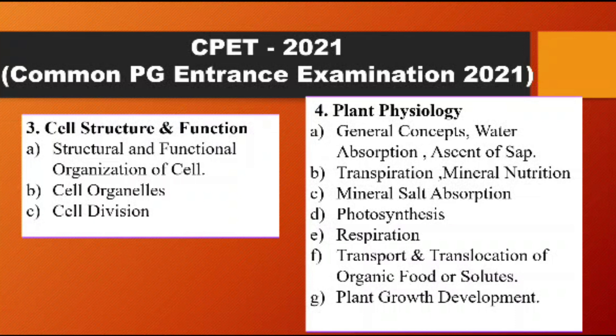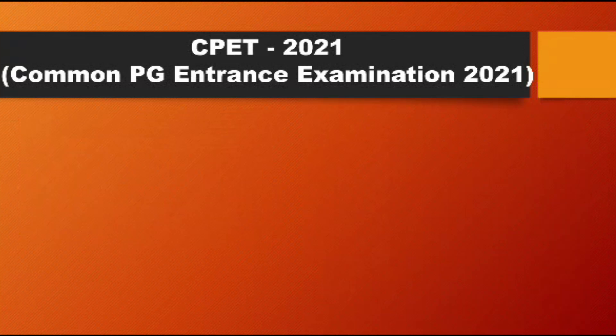The next topic is Plant Growth and Development. Here are five important plant hormones to study comparatively: auxin, gibberellin, cytokinin, ethylene, and abscisic acid. Then you must cover photoperiodism and vernalization, both of which are very important topics in plant physiology.